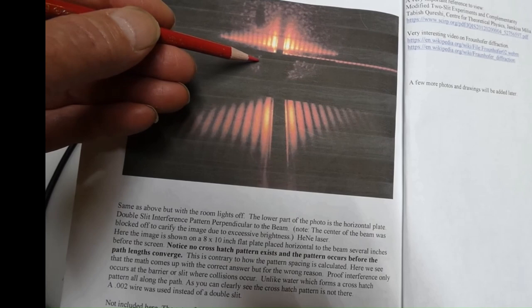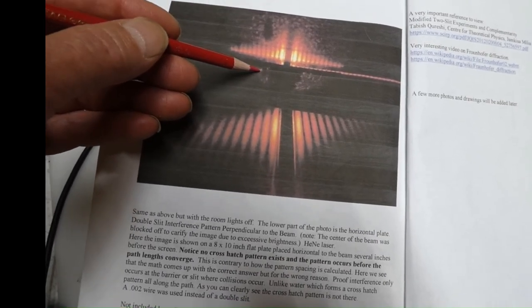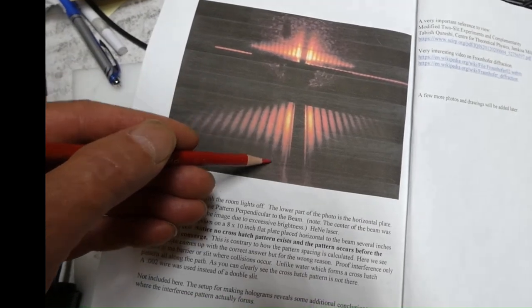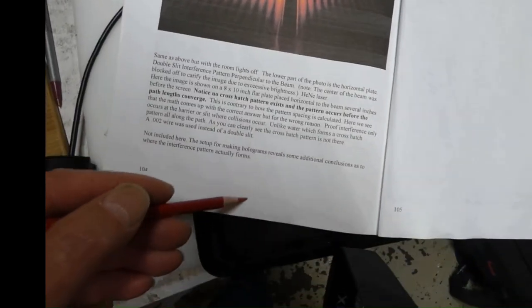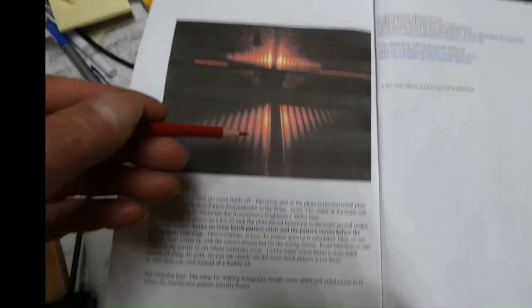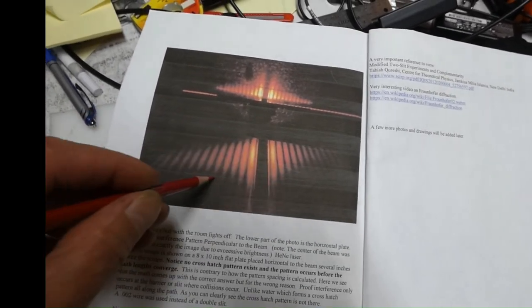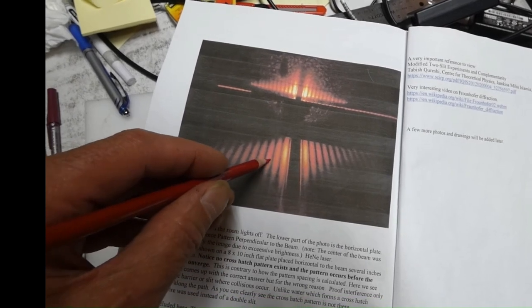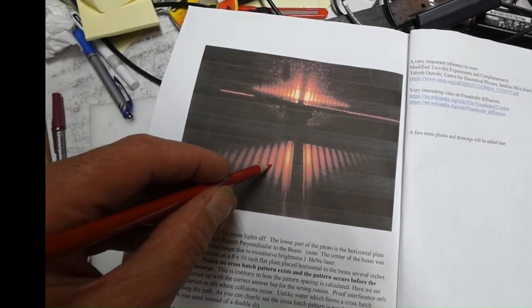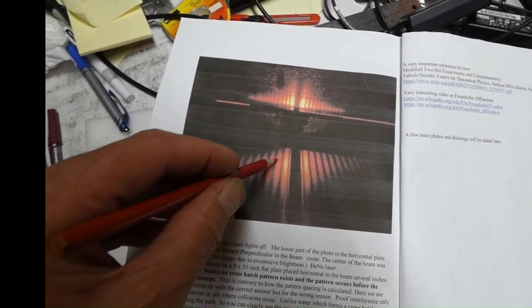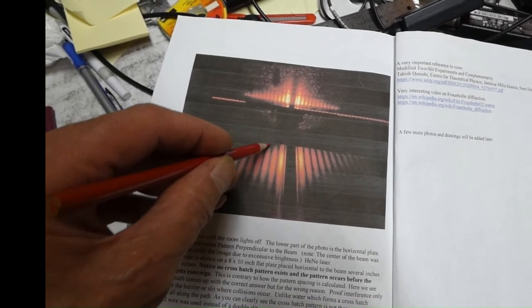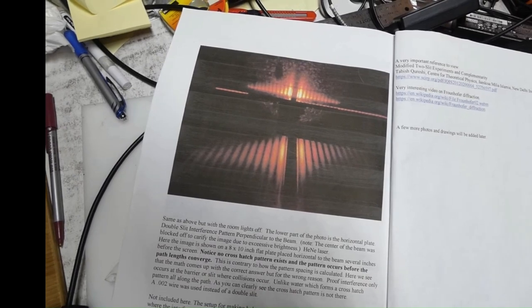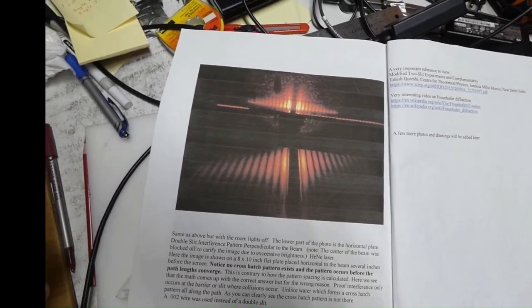And you can also take a piece of tape, a long piece of tape. I have a video of that. And run it between these two, all the way to the slit. And it doesn't affect this. It doesn't affect the pattern. So nothing's crossing across these areas, the dark areas. Nothing's crossing across the dark area. So there's something wrong with the current theory.